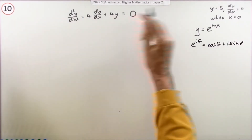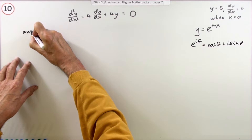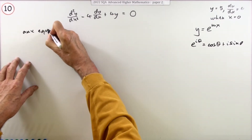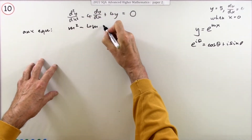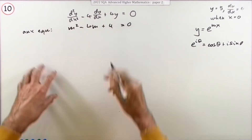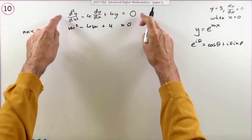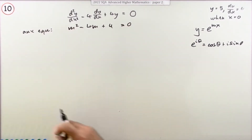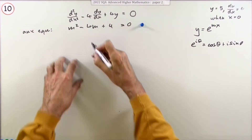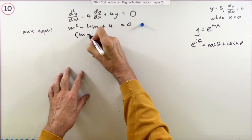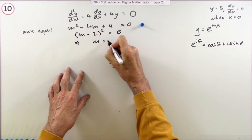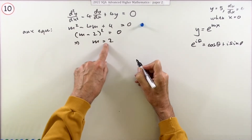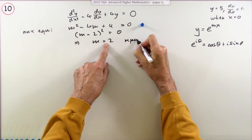Feeding that through and tidying it up gives the auxiliary equation, which using the coefficients is m² − 4m + 4 = 0. Normally you just jump straight in with that — writing it down gets a mark. Solving it: that's just (m − 2)² = 0, which means m = 2. But there's only one answer — you've got a repeated root.